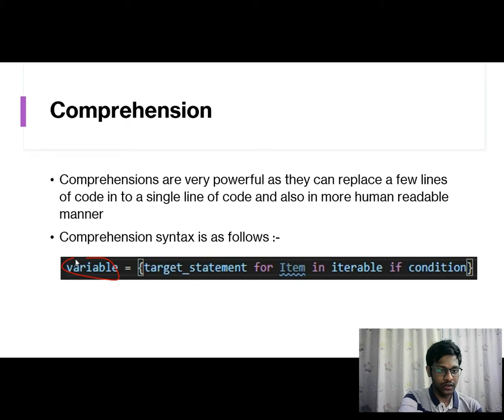Here's the syntax: a variable is assigned using curly braces with a target statement. You'll be collecting items from the iterable and you want to do something with this item. That something is passed in the target statement.